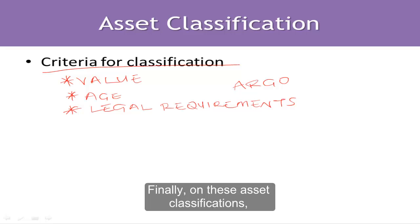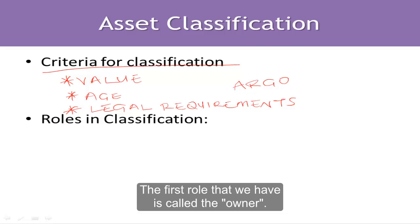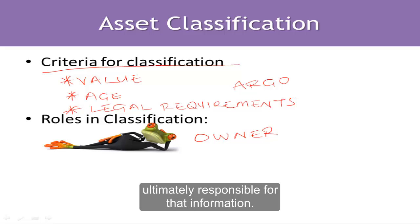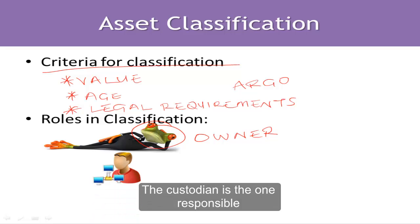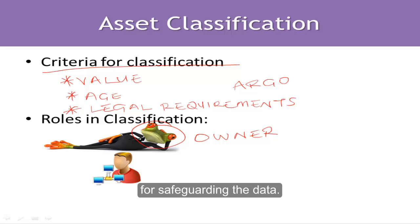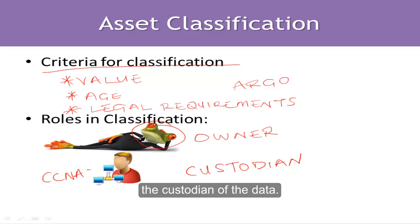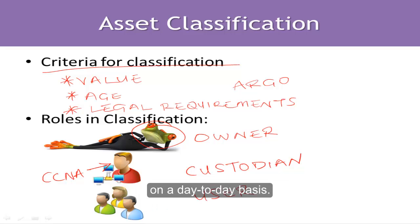Finally, we will talk about the roles in classification. The first role is the owner — the owner is the one ultimately responsible for that information, and this is usually senior management. Next we have the custodian, who is responsible for safeguarding the data — this is usually the IT department. As a CCNA security professional, this is where you will fall. Finally, we have the user — the person or group of persons who use the data on a day-to-day basis.